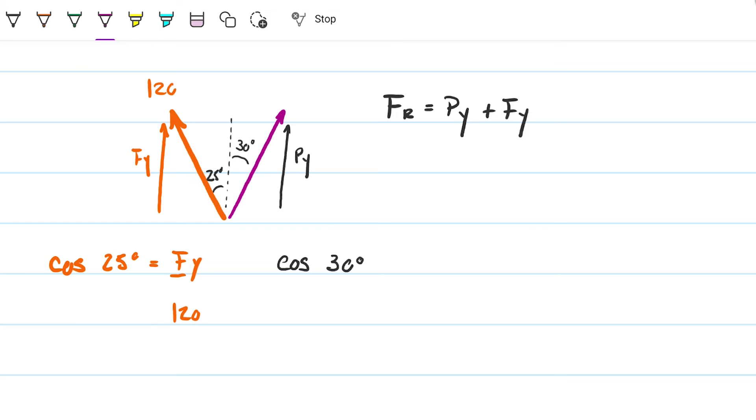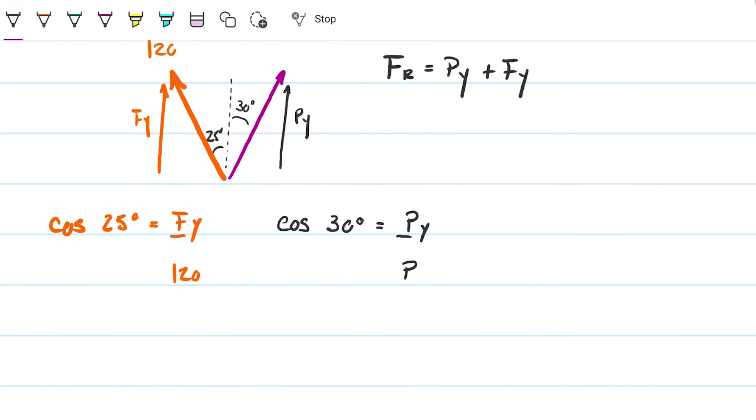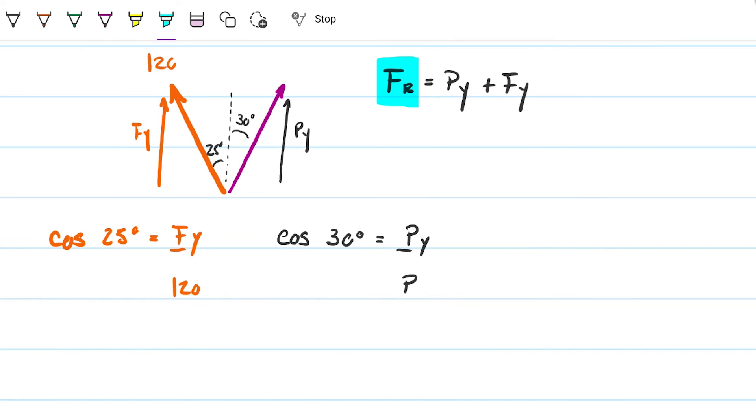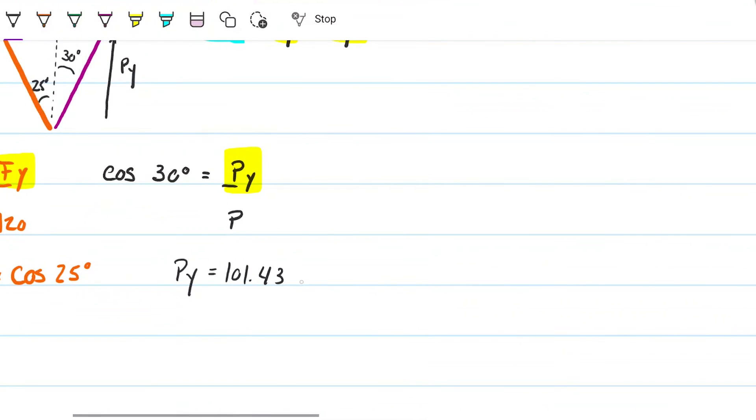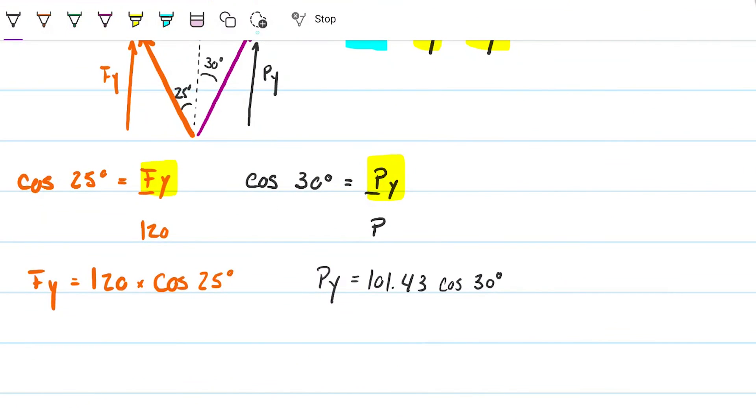So therefore, the cosine of 30 is equal to my Py divided by my P. Now what am I after here? I'm after the resultant force, which is a sum of Py and Fy. I can calculate Fy, I can calculate Py, all good. I have everything I can possibly need to be able to solve this. So to do that, I'm first going to calculate, we might just put everything into one equation. So if I want to, I can do, okay, so Fy is just 120 times the cosine of 25 degrees, and Py is simply P, which is 101.43, times the cosine of 30 degrees. So if I'm interested in FR, FR is simply the sum of these two, then it's as simple as summing these two up.